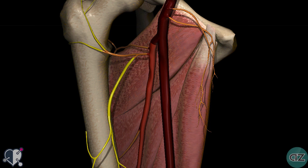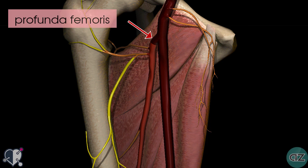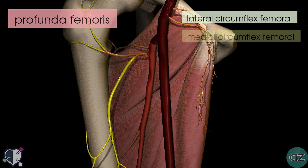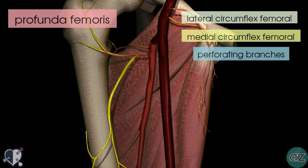Moving a bit further down, we can see that there are several branches which are given off in the thigh. You've got the deep artery of the thigh, which is called the profunda femoris artery. This artery is the main supplier to the adductor, the extensor and the flexor muscles of the thigh. The profunda femoris artery gives off three main branches: the lateral circumflex, the medial circumflex, and then perforating branches.